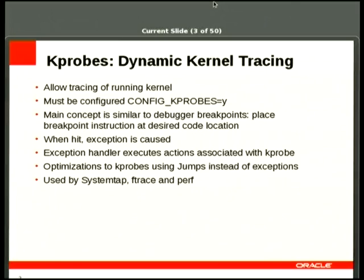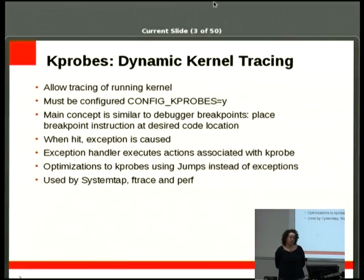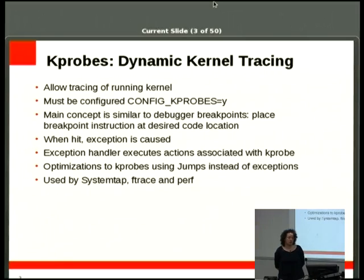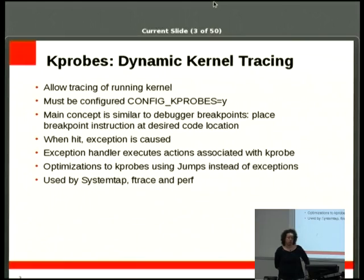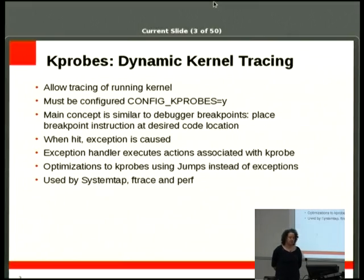kprobes allows you to do dynamic kernel tracing. When I talk about dynamic tracing I mean tracing that is taking place on an executable where you don't have to recompile, you don't have fixed trace points, and you can decide on the fly — kind of like a debugger — where to put your trace points and what to collect. You can do this on a running kernel; you just need kprobes configured at build time.